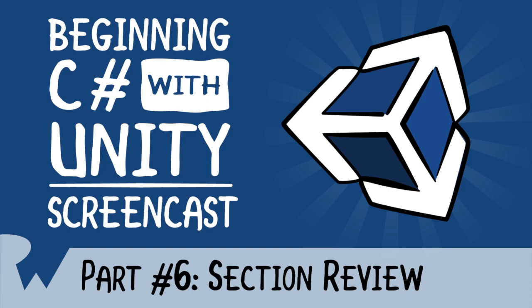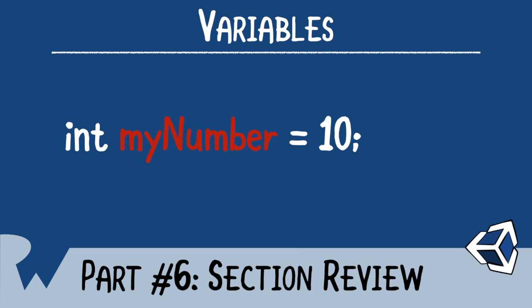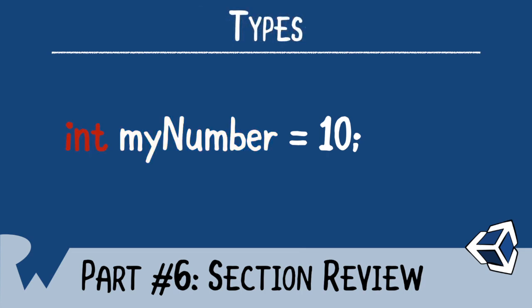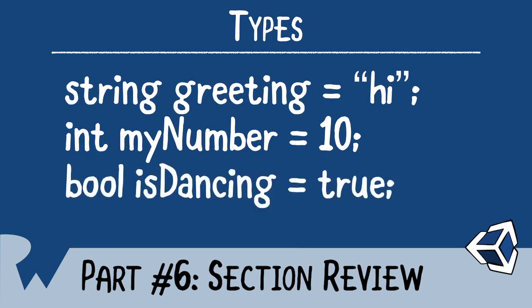At the start of the series, you learned how to create scripts, and then how to create variables from them. From there, it's been all about data. You learned about variables, how to give them names, and what it means to have variables of different types. You learned that an int variable is different from a string variable, which of course is different from a bool variable. Later on, you'll be defining your own types.